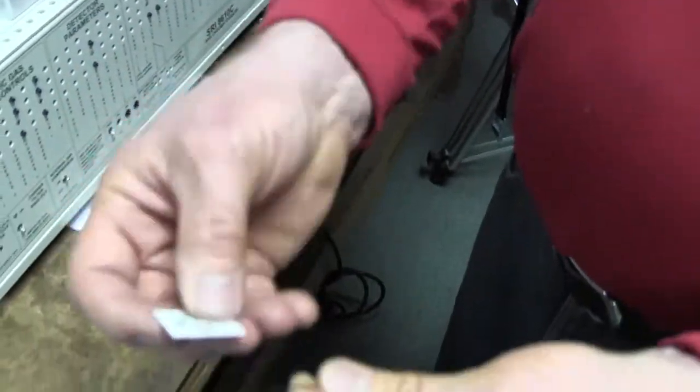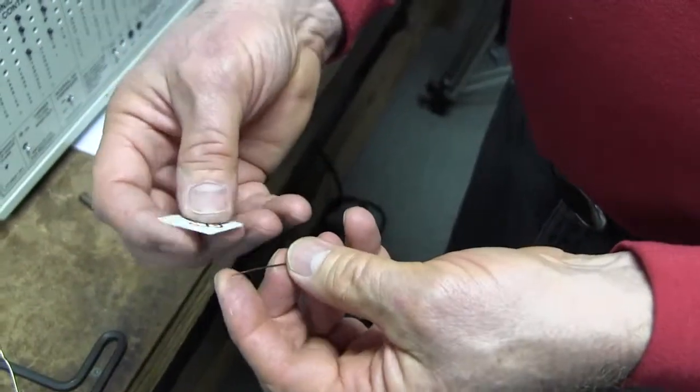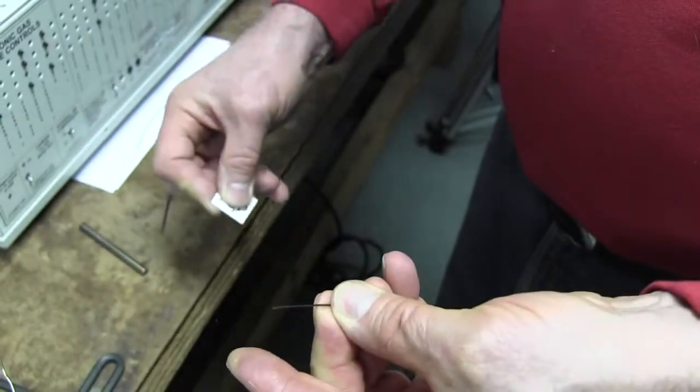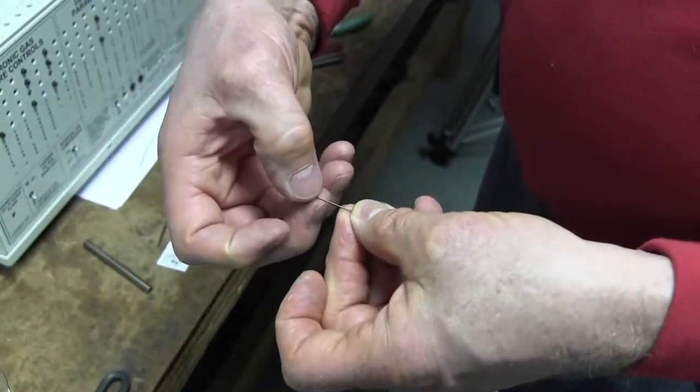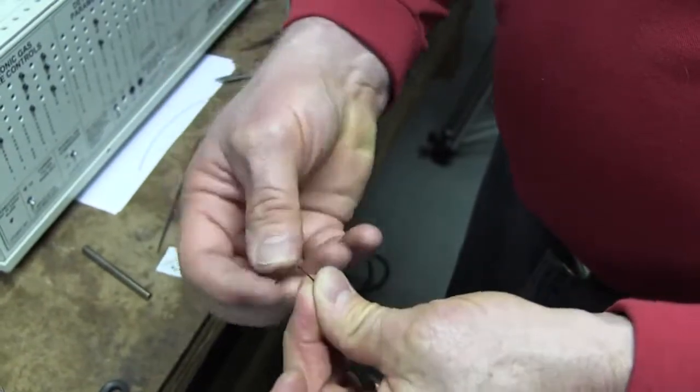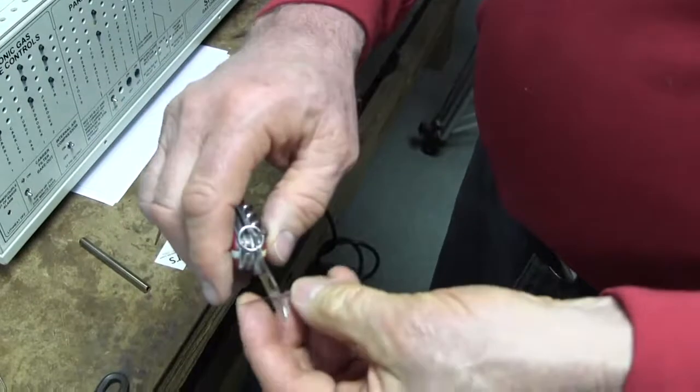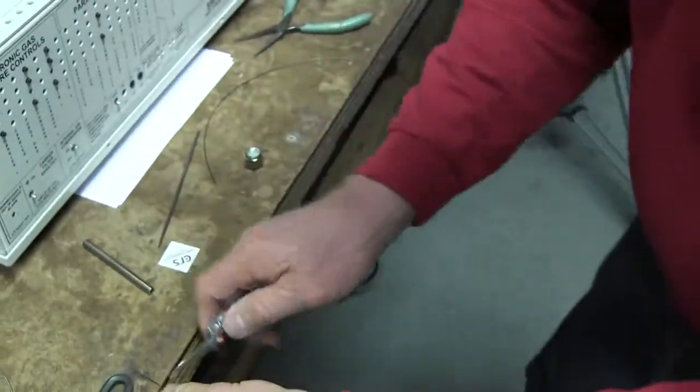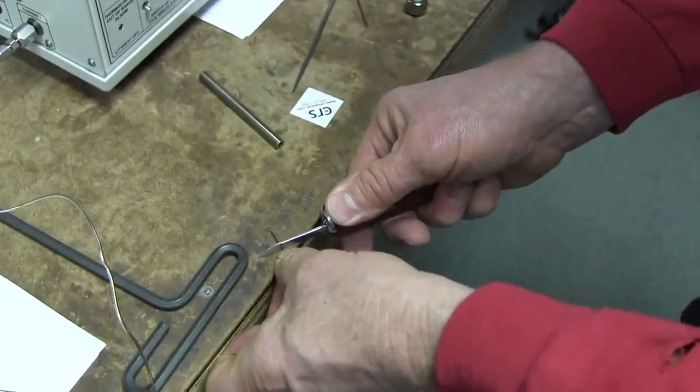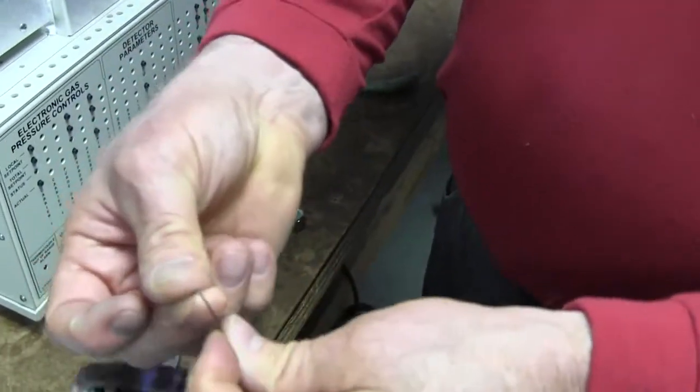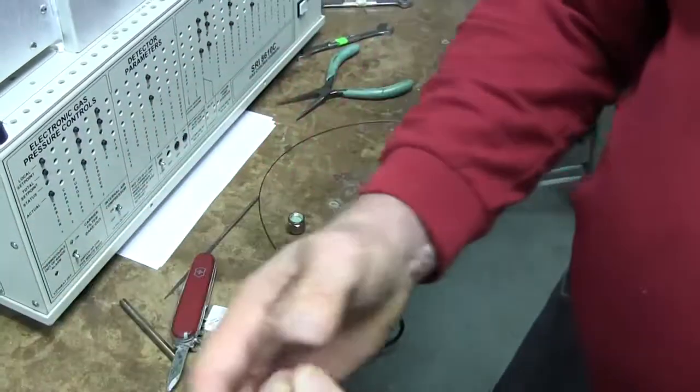There's also a tool called a ceramic scoring wafer. It does basically the same job. You use the hard edge of the ceramic to put a little nick into the column and then break the column over your fingernail. In a pinch you can use a Swiss Army knife. Be careful not to cut yourself. Put a little nick in the column and then break the column over the nick.